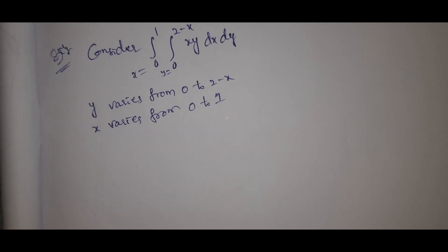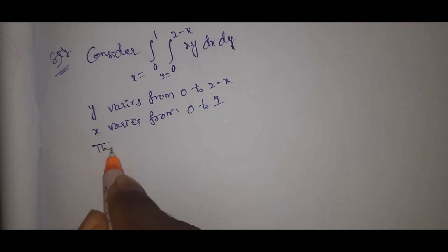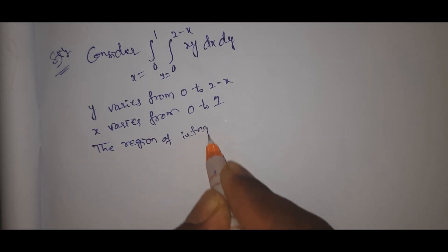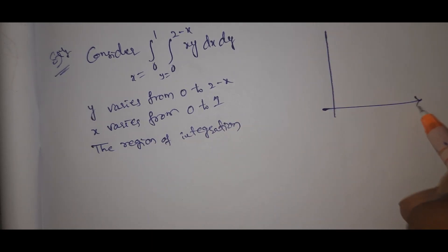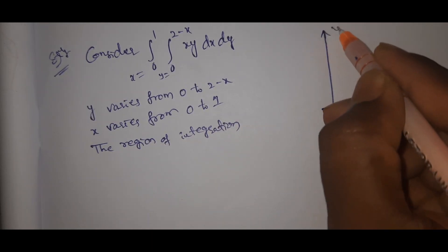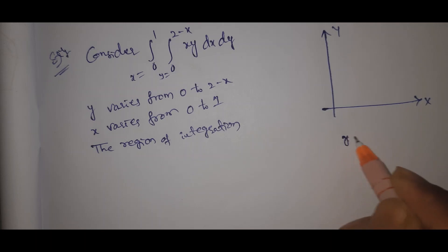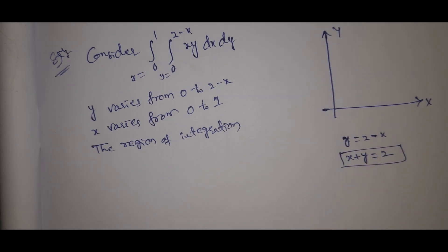Now let's look at the diagram of the region of integration. On the x-axis and y-axis, we have the line x plus y equal to 2, which is a straight line.